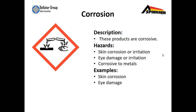The next item is corrosion. These products are corrosive, meaning they can melt your skin on contact. Hazards include skin corrosion or irritation, eye damage or irritation, or corrosive to metals, and examples include skin corrosion and eye damage.